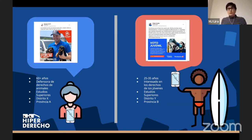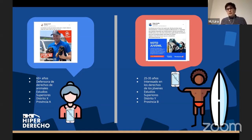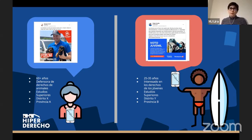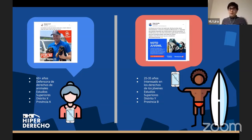Si vemos la otra persona con un perfil bastante diferente — interesada en los derechos de los jóvenes, con estudios superiores, de otro distrito, de otro grupo etario — puede recibir publicidad que apela a su edad: voto juvenil. A la otra persona no le interesaría eso, incluso podría considerarlo peligroso. Ahí vamos viendo cómo se van forjando estas burbujas de información.